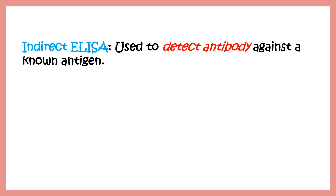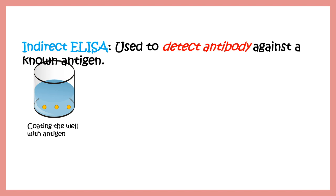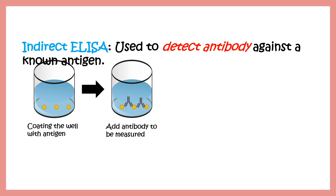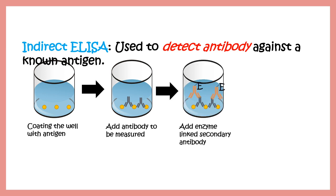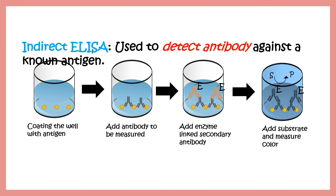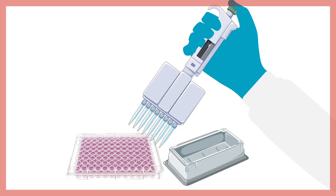Here is how ELISA works as a basic framework. To detect an antibody in a patient sample, first the wells of a microtiter plate are coated with a certain antigen. The patient sample, which likely contains the target antibody, is then added. If the antibody is present, secondary antibodies bind to the primary antibody. Since secondary antibodies are enzyme-linked, a chromogenic reaction takes place, color develops, the absorbance value changes, and the concentration of antibodies can be calculated.